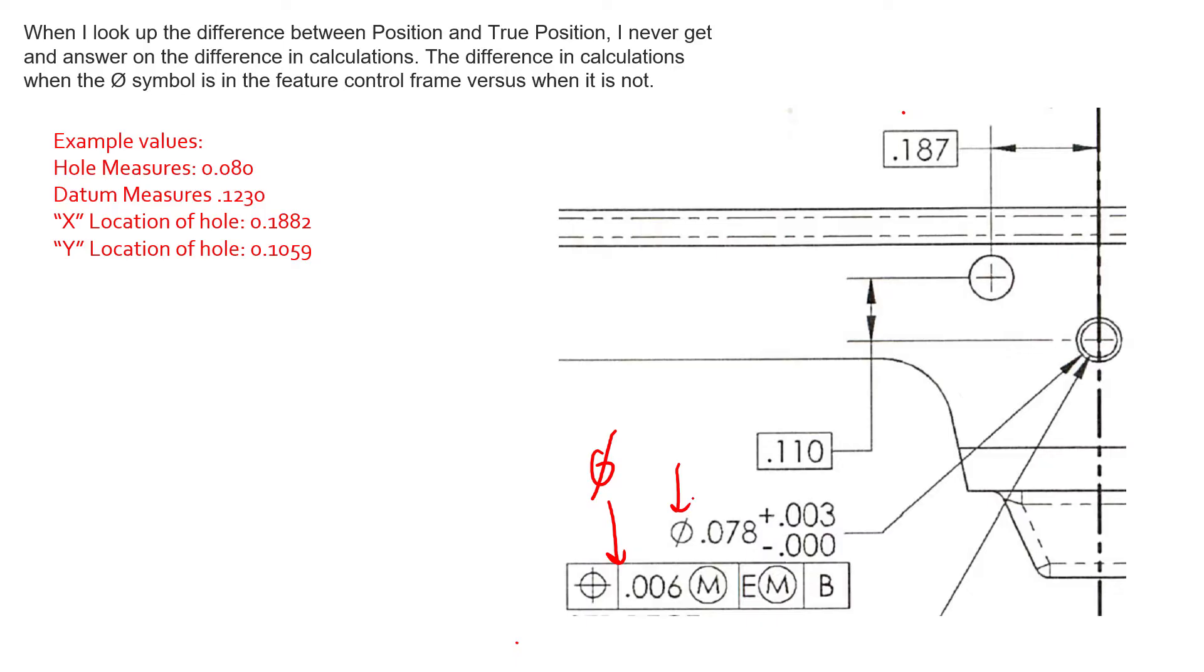So in the case of a cylindrical feature, we're going to have a tolerance zone that's also a cylinder. So this value here is a diametric value.